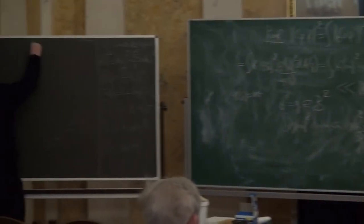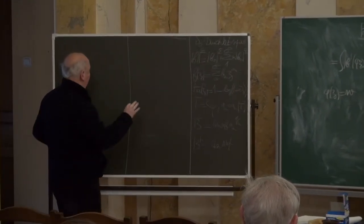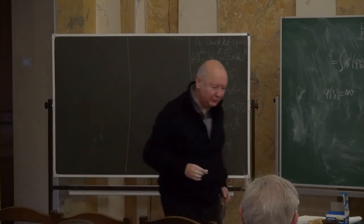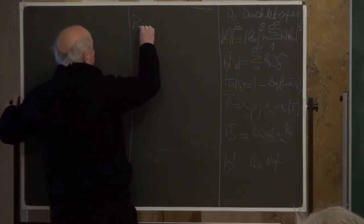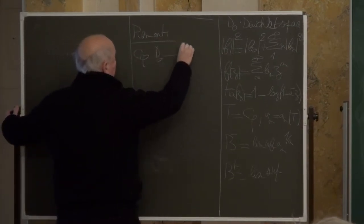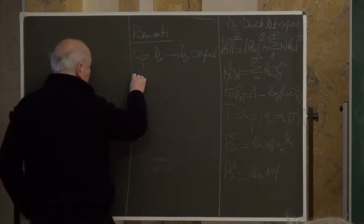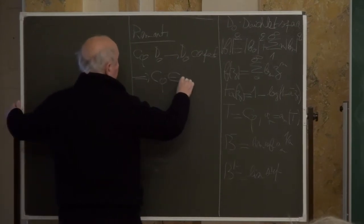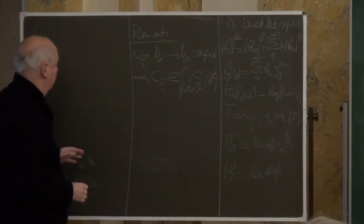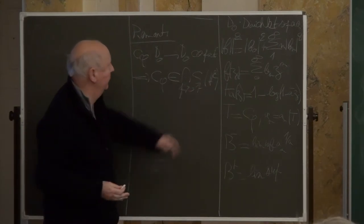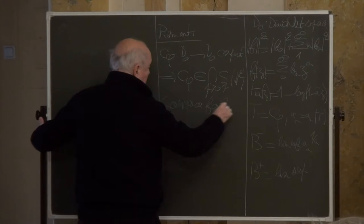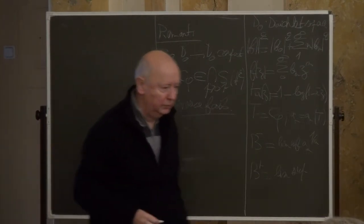A remark: if C_φ from D₀ to itself is compact, one can prove that C_φ is in all the Schatten classes of the Hardy space. So compactness on D₀ implies strong Schatten membership on the Hardy space, and as we saw with the lens map example, the converse fails.